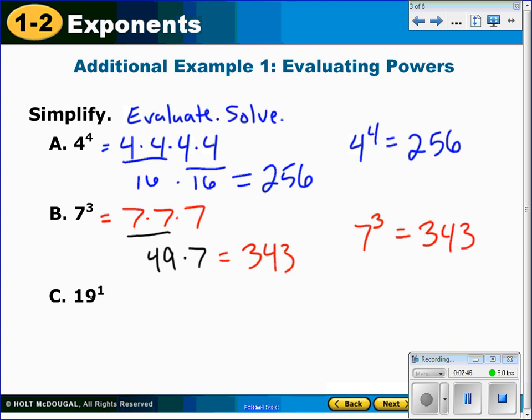Finally, 19 to the first power. That means we're going to write 19 one time. So 19 to the first power is just 19.